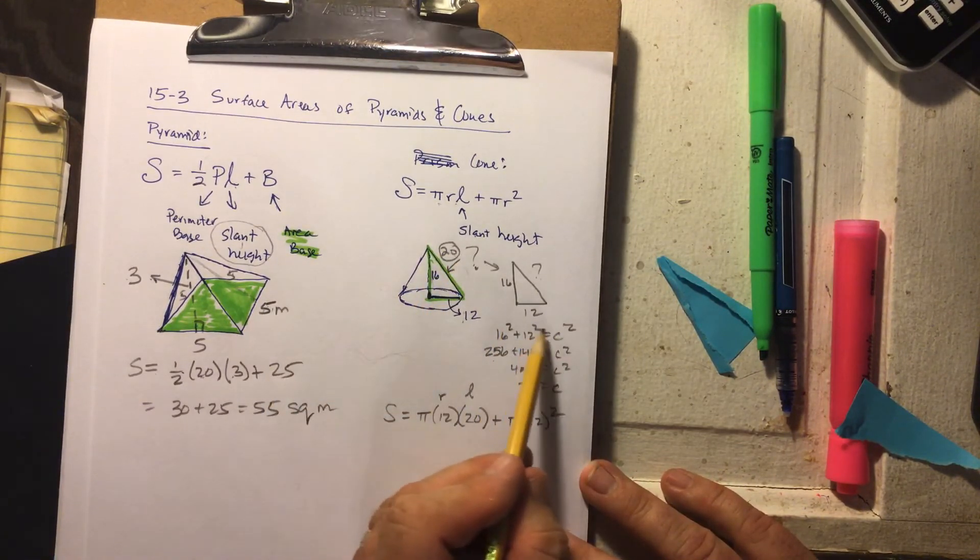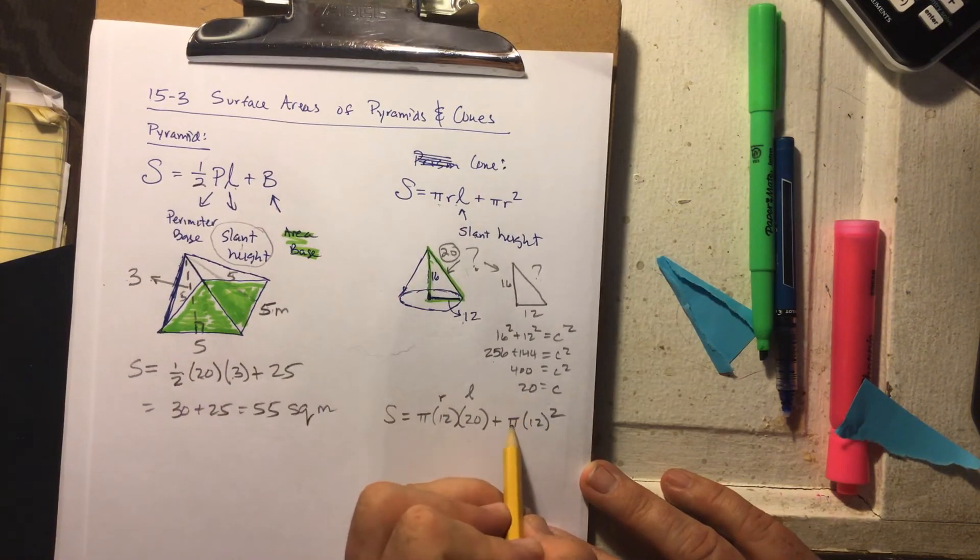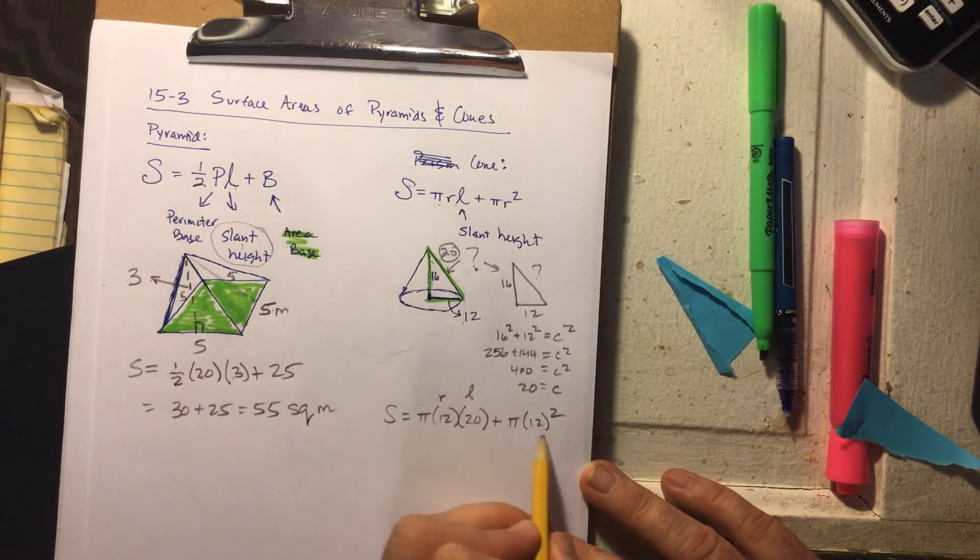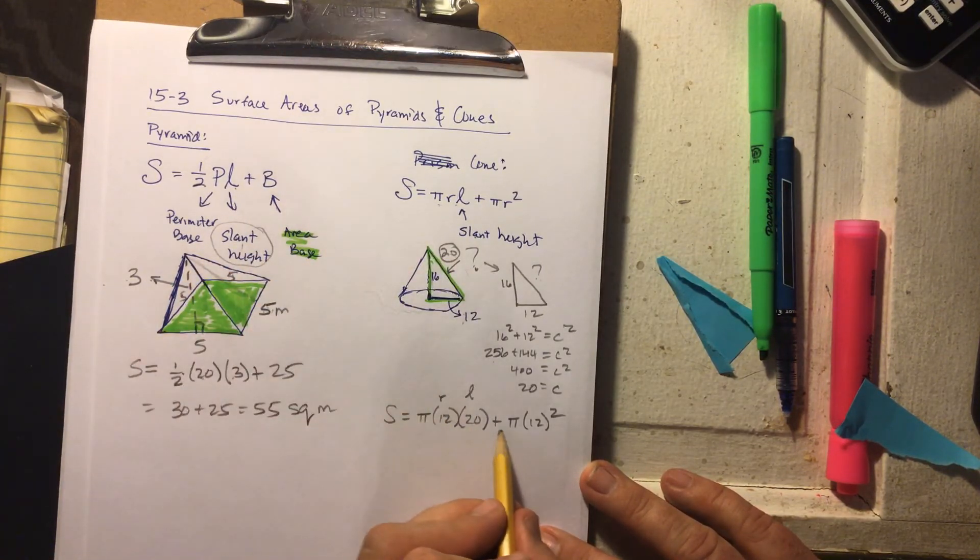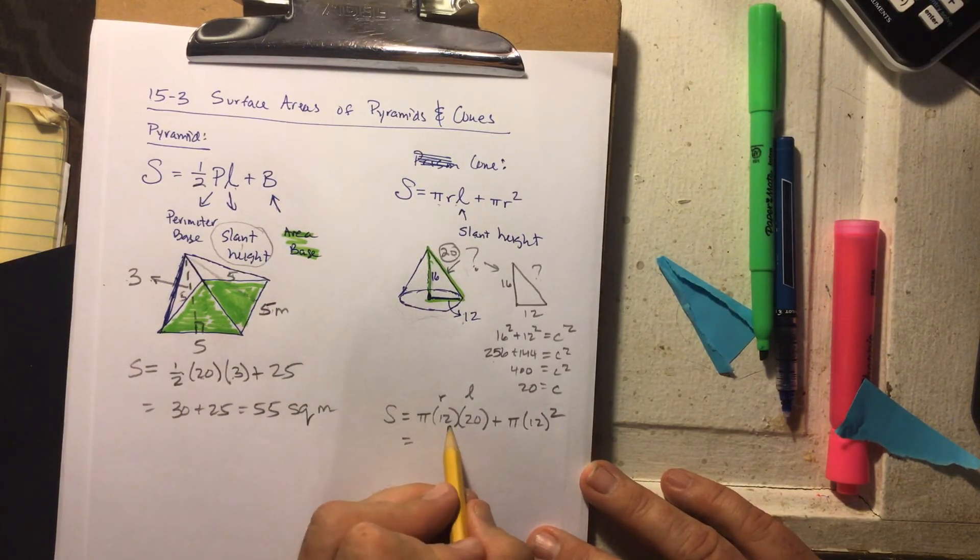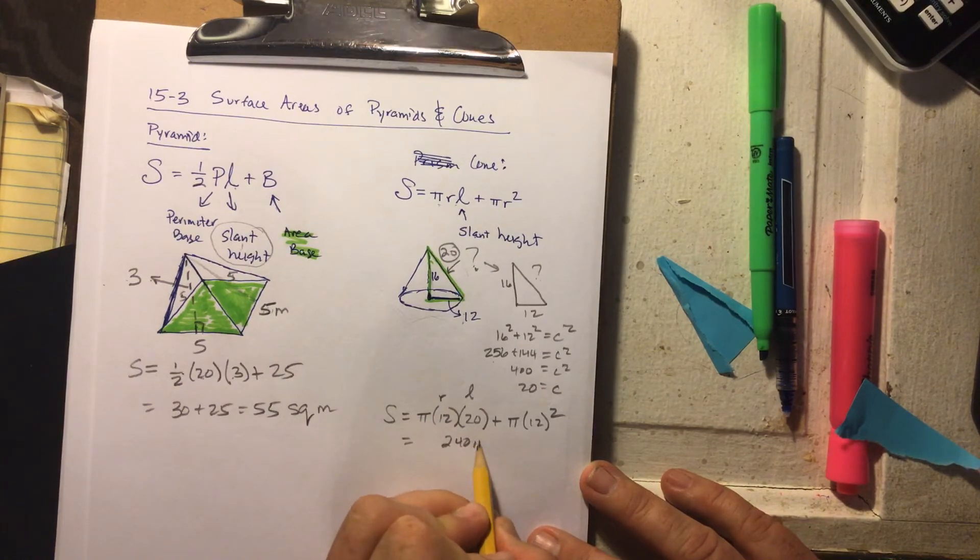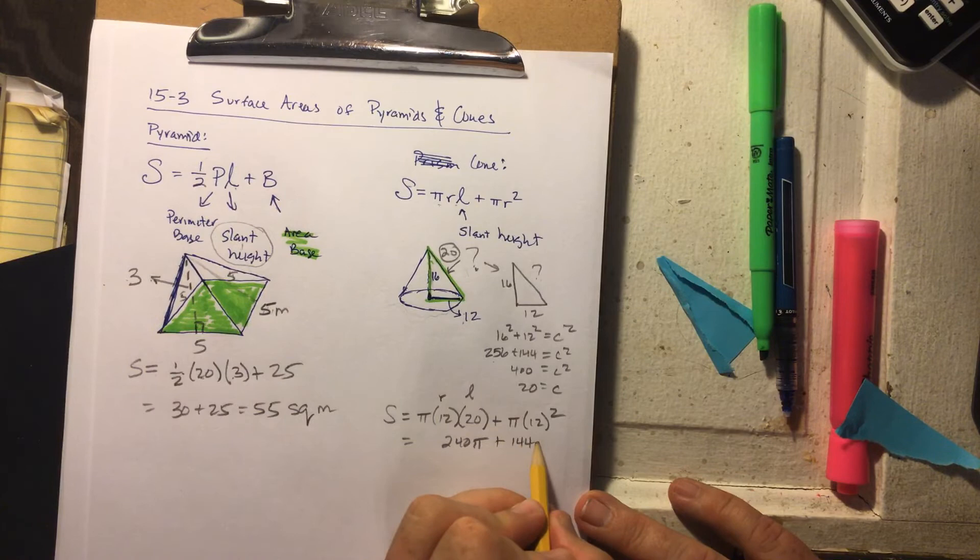So again, this is my r which comes from here, this is my slant height which I figured out using Pythagorean's theorem because they didn't give it to me, and then what is my area of the bottom. So the surface area is the area of the cone and the area of the bottom. So we get 12 times 20 is 240 pi plus 144 pi.